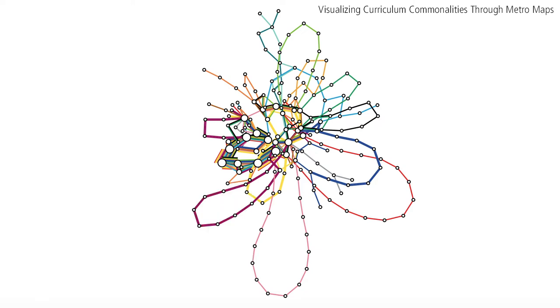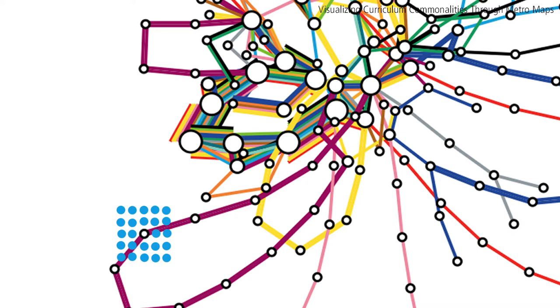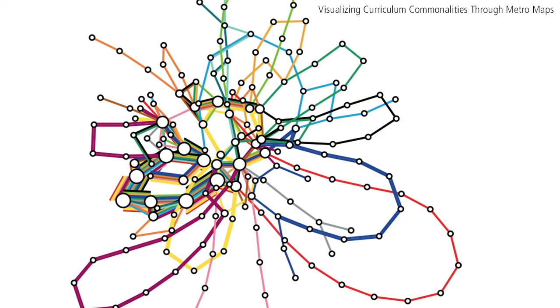The points are then iterated upon by exploring the area surrounding each station within a given radius and determining if the overall graph would look a little bit more like a metro map by moving that station to any of the surrounding points. This is determined by applying a set of six criteria.